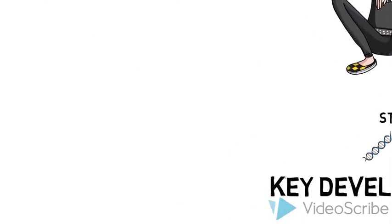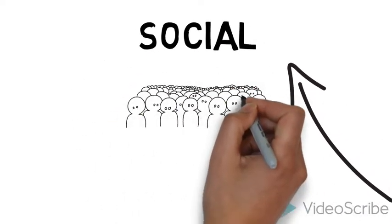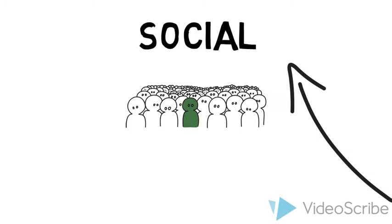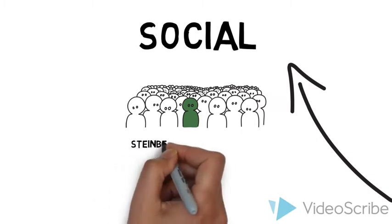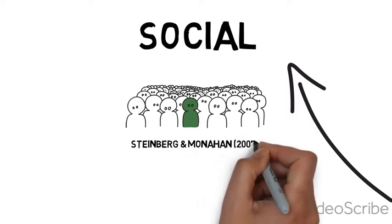Number three, social development. Dylan has isolated himself from his usual friends who previously encouraged positive behaviour. Steinberg and Monaghan believe that peer approval is the primary contextual factor contributing to adolescents' heightened tendency to make risky decisions.